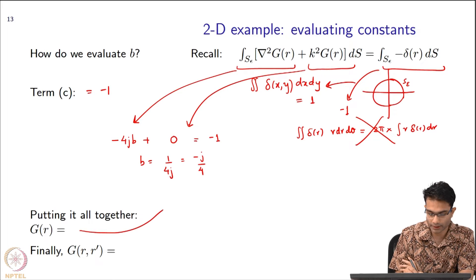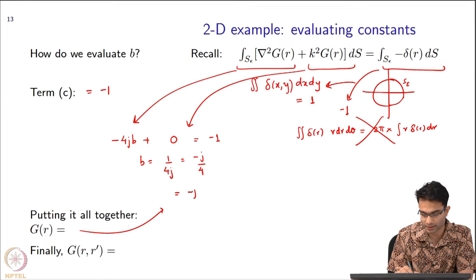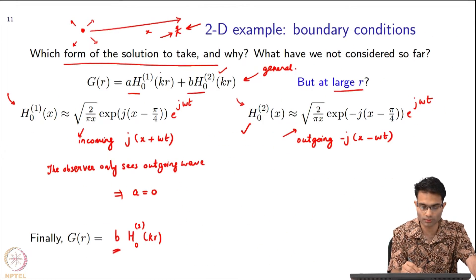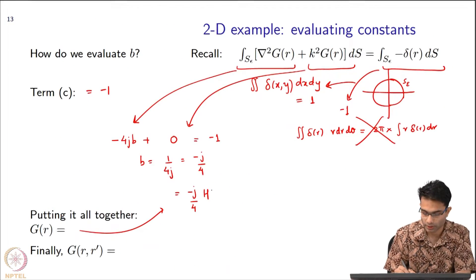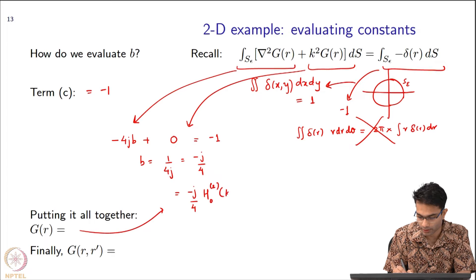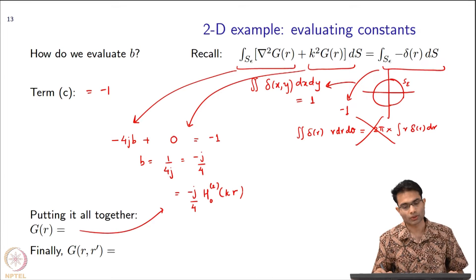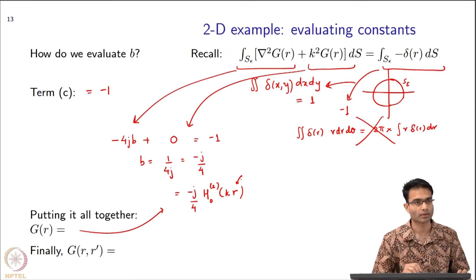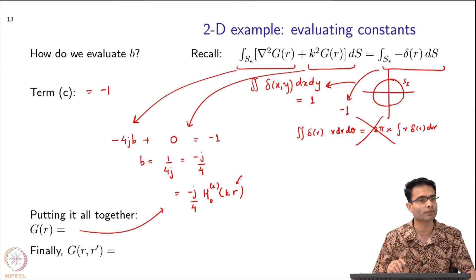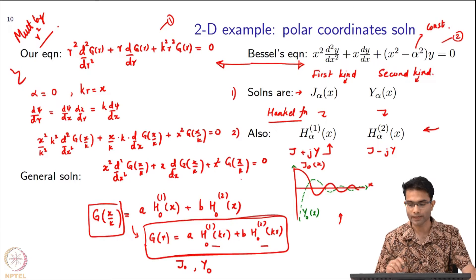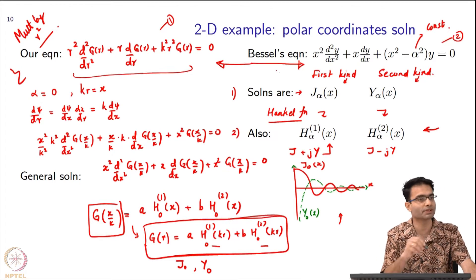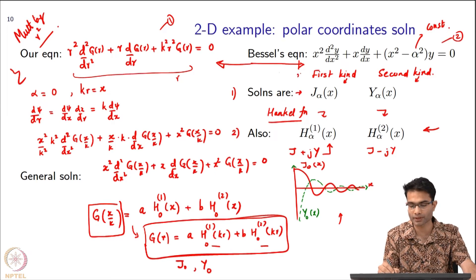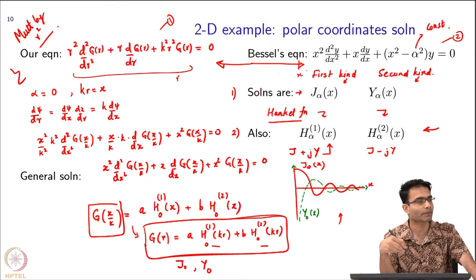If I put it all together finally, I can write my Green's function as equal to -j/4 H₀⁽²⁾. What I started with were 2 terms and I am left with only the second term - H₀ of the second kind, kr. Another thing that is easy to get confused by: I have simply written r over here. Let's identify where this r came from in the differential equation. This r came from identifying the wave equation with Bessel's differential equation.